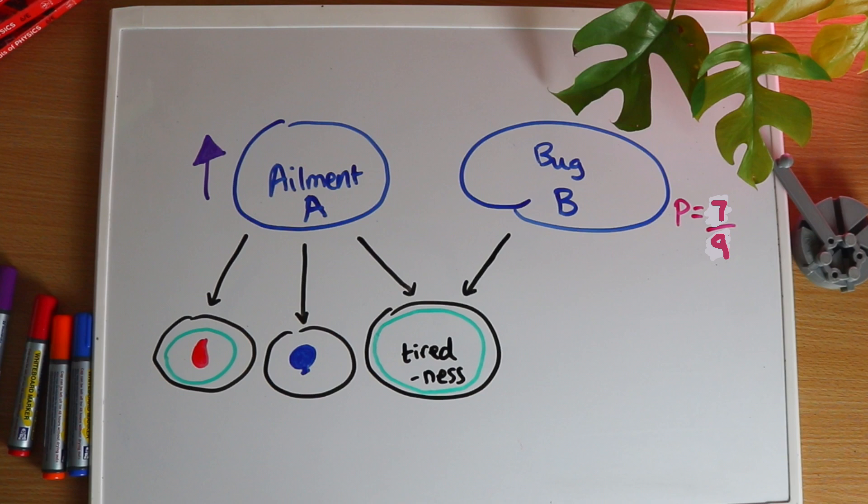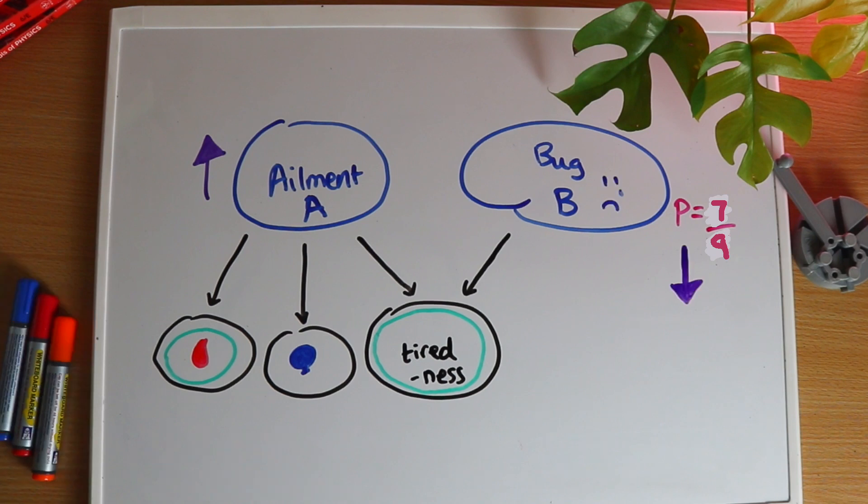The answer is, it does. The reason the probability of B was high in the first place was because tiredness needed an explanation, and A and B are both possible explanations. But now that we have more reason to believe that A happened, we don't need B as an explanation as much. Therefore, the probability of it becomes lower.